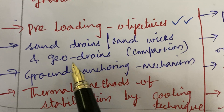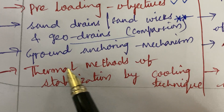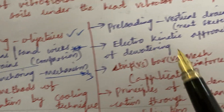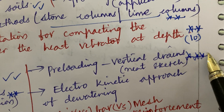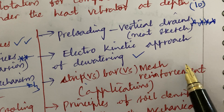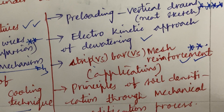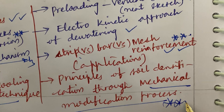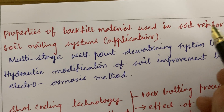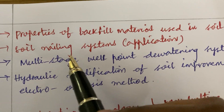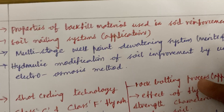Sand drains, sand wicks, geodrains, and the comparison among them are important. Ground anchoring mechanism is a 2 to 3 mark question. Thermal methods for stabilization by cooling technique, and pre-loading with vertical drain along with a neat sketch, are topmost gunshot questions. Electrokinetic approach of dewatering, strip versus bar versus mesh reinforcement and their applications is a 5 mark question. Principles of soil densification through mechanical modification process is also a 5 mark question. These are very important questions taken from previous year question papers and the syllabus for Ground Improvement Techniques.